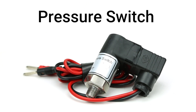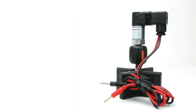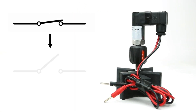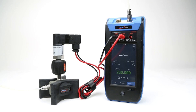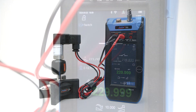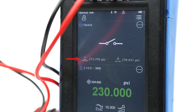The last device, a pressure switch, operates an electrical contact to interrupt or divert the current when a certain threshold of pressure has been reached. These are used in any application where an automatic response is needed, like when pressure reaches a certain high or low threshold within a system.